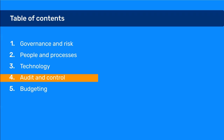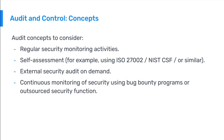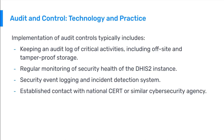The next topic is audit and control. Audit concepts to consider include: regular security monitoring activities, self-assessments using ISO or NIST frameworks, external security audits on demand, and continuous monitoring using bug bounty programs or outsourced security functions. Implementation of audit controls typically includes keeping an audit log with critical activities, regular monitoring of security health of the DHIS2 instance, security event logging and incident detection systems, and establishing contact with a national CERT or similar cybersecurity agency.